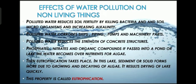Phosphates, nitrates, and organic compounds, if passed into a pond or lake, make the water over-nutrient for algae, and then eutrophication takes place. In the lake, sediment or solid matter forms more due to the growing and decaying of algae, and it results in the drying off of the lake. This property is called eutrophication.